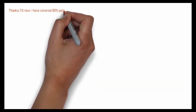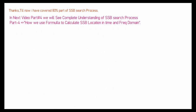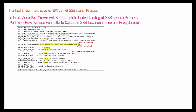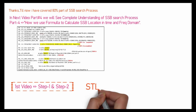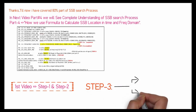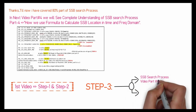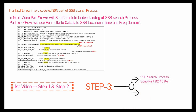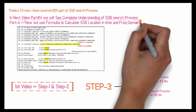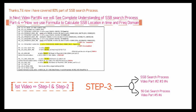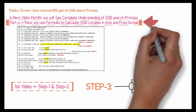Once you get the time domain location and frequency domain location, you know the exact location of the SSB. This video covers 80% of the SSB search process. Part four will give a complete understanding, using formulas for time and frequency domain to calculate the SSB location. This series covers step one through step three across parts one to four, followed by 5G cell search process in videos five and six.